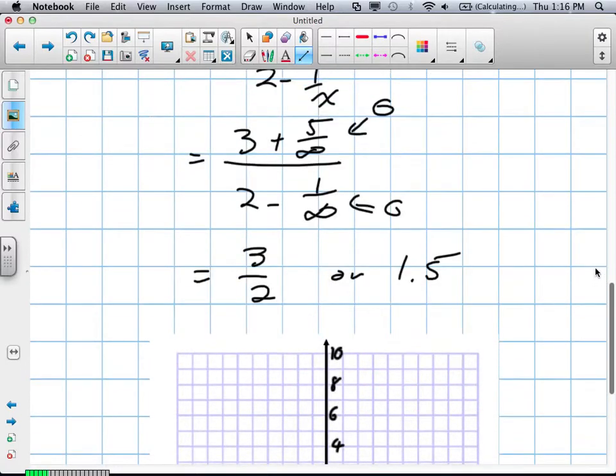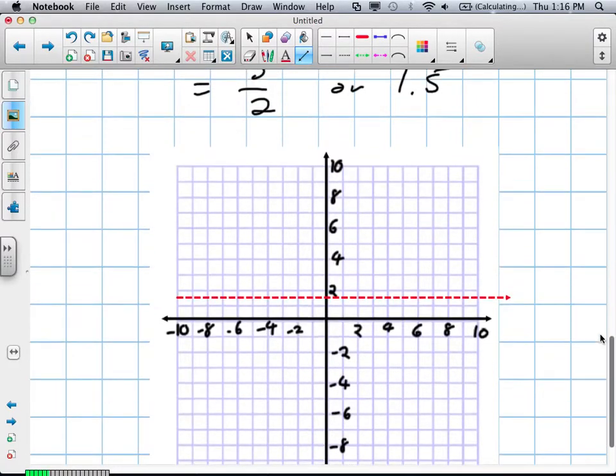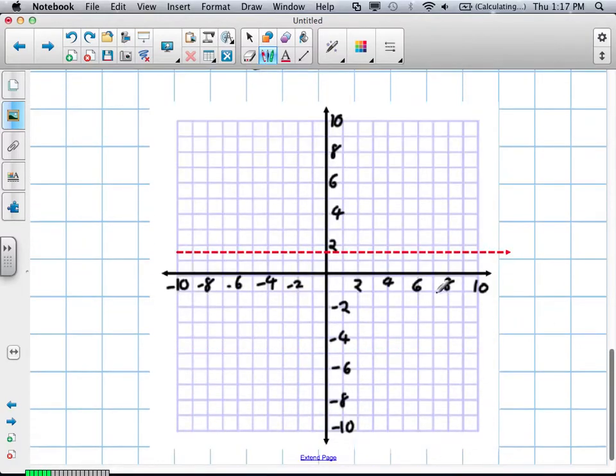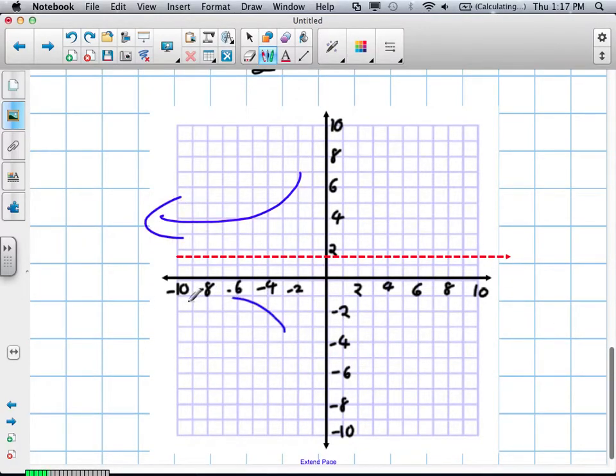Now, we need to talk about the behavior again. But this time we're talking towards, tending towards positive infinity. In our last example, we talked about tending towards negative infinity, and that would be negative is this way. We're now talking about positive infinity. And all we're trying to find out is, does it approach positive infinity from below the horizontal asymptote, or does it approach positive infinity from above the horizontal asymptote?